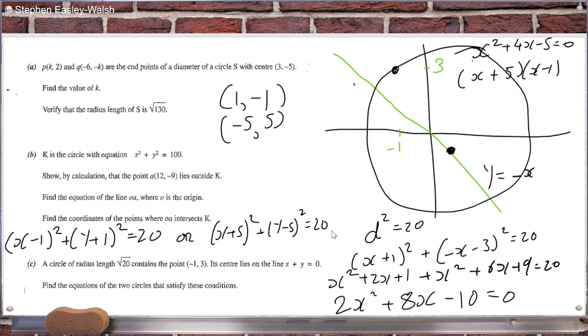But we want the equations. So the equations would be x minus one squared plus y plus one squared equals 20 or x plus five squared plus y minus five squared equals 20. Well, they have radius of 20 or root 20. I should say. It's center is on the line x, y. So yeah, that checks out as well. And it contains the point minus one, three.